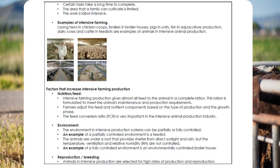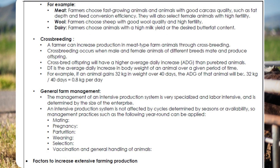Reproduction/Breeding: animals in intensive production are selected for high rates of production and reproduction. For example, meat farmers choose fast-growing animals and animals with good carcass quality, such as fat depth and feed conversion efficiency; they will also select female animals with high fertility. Wool farmers choose sheep with good wool quality and high fertility. Dairy farmers choose animals with a high milk yield or the desired butterfat content.